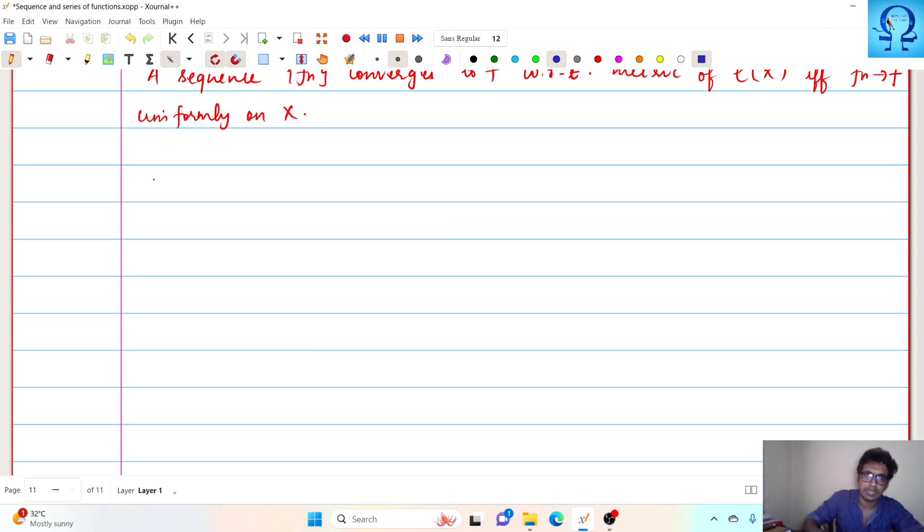Now we shall present a theorem that says C of X with this supremum metric is a complete metric space. Now that we have established this is a metric space, in order to justify it as a complete metric space, we should take some Cauchy sequence and we will have to prove that that Cauchy sequence converges.